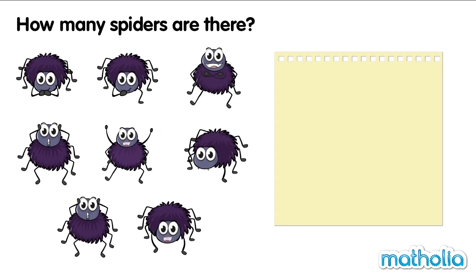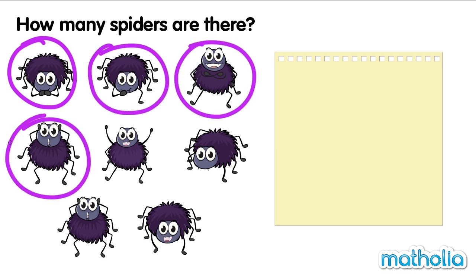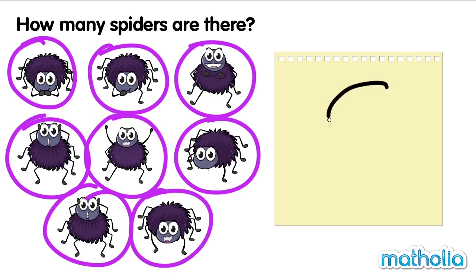How many spiders are there? One. Two. Three. Four. Five. Six. Seven. Eight. There are eight spiders. Eight.